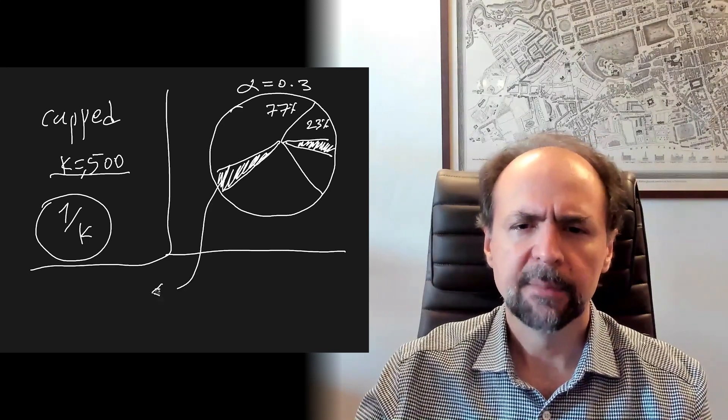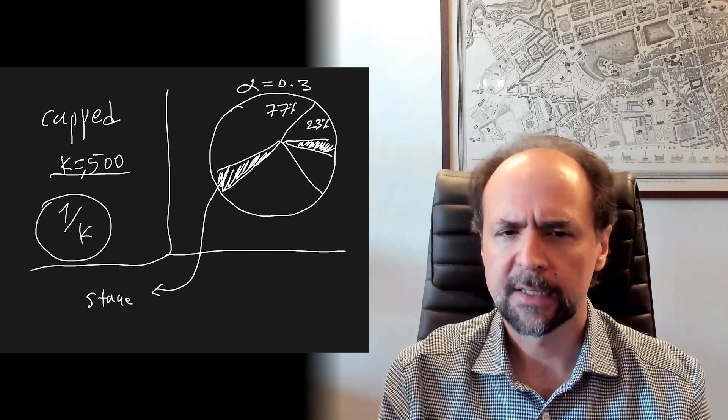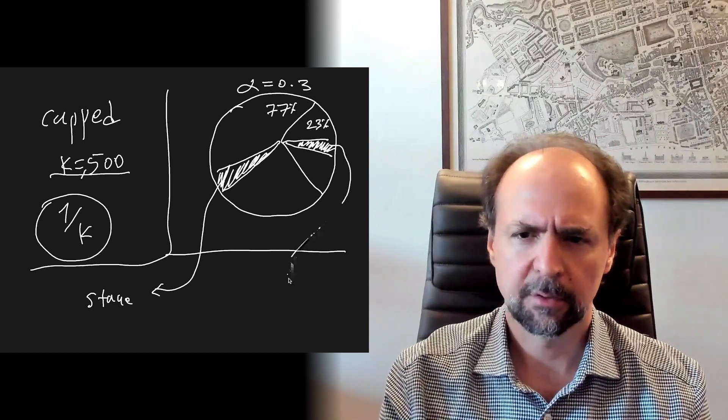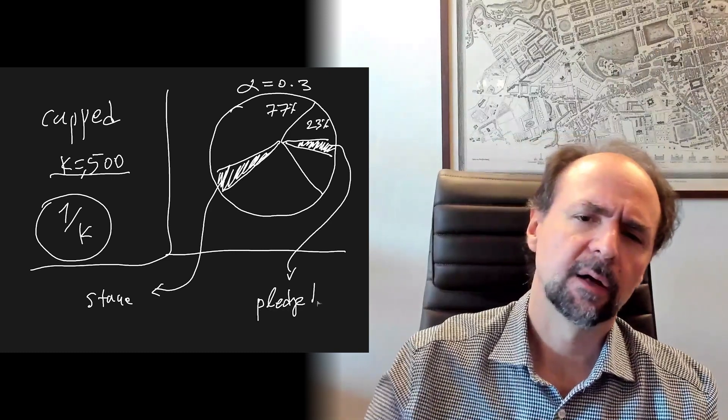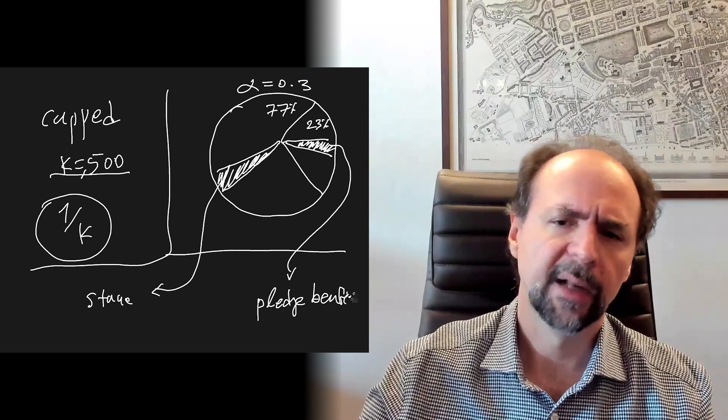A pool can claim a slice from the left piece in proportion to its total stake, up to the 1 over k threshold. It can also claim a slice from the right piece, according to what we call a pledge benefit function.